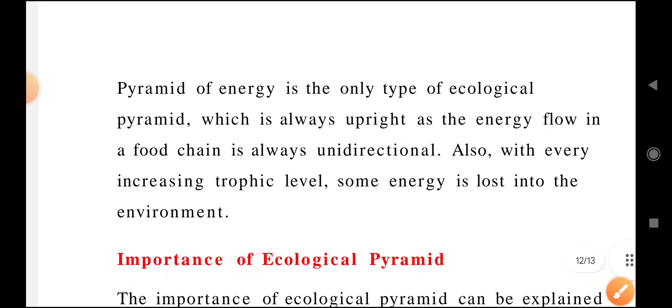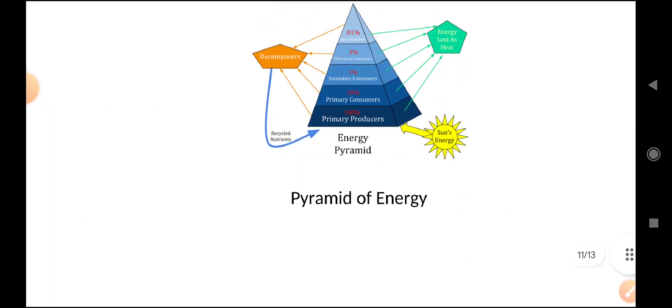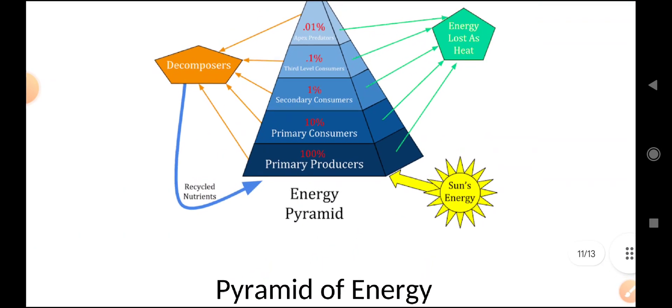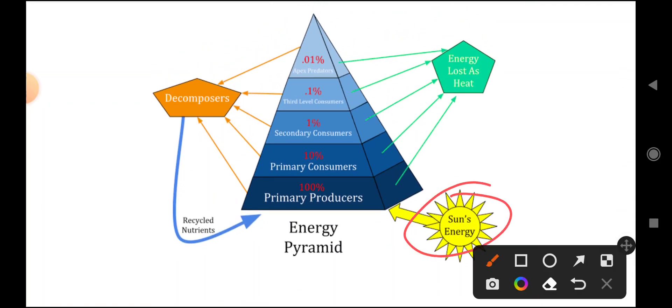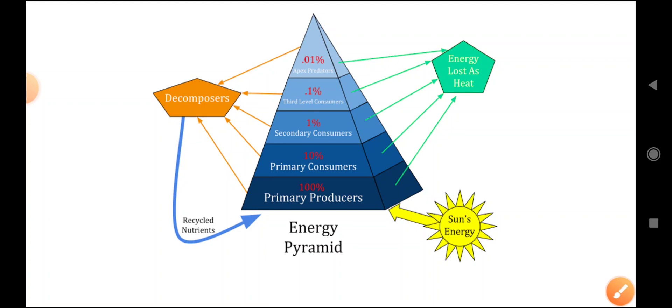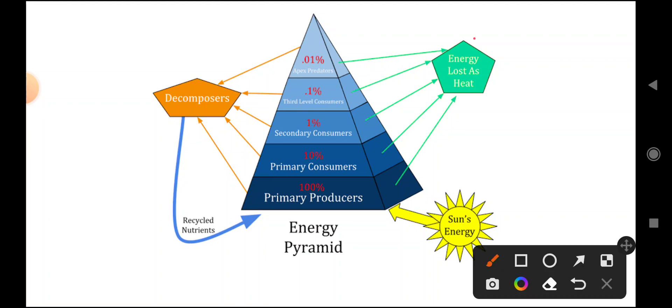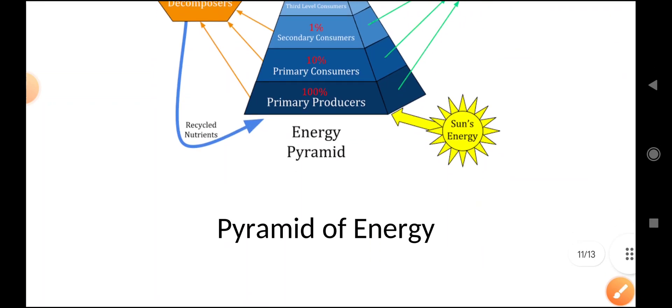This is what the energy pyramid is all about. With sunlight energy, primary producers like grass release 100% of the energy. Then primary consumers like grasshoppers release 10% energy, and something gets decomposed here. Then secondary consumers, then third level consumers, and finally energy is lost as heat. You should show this diagram also.